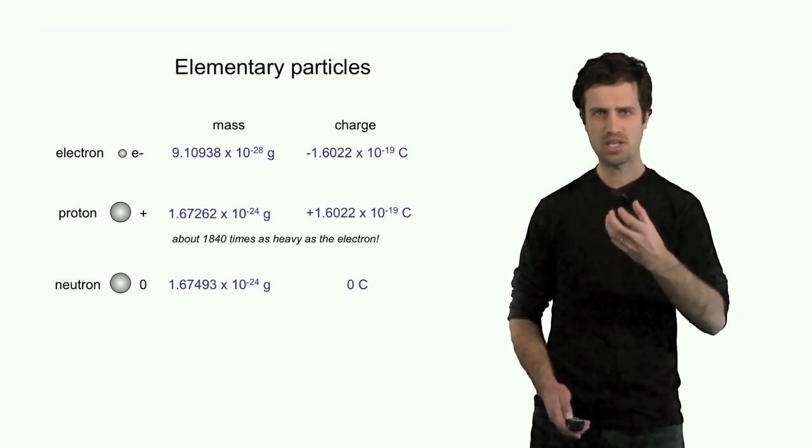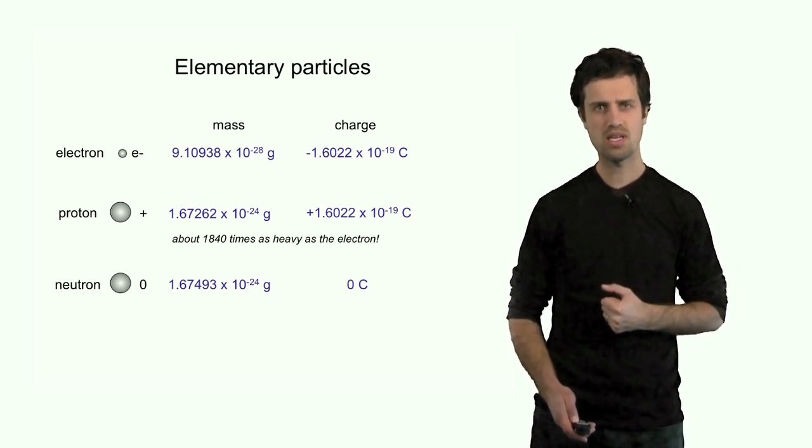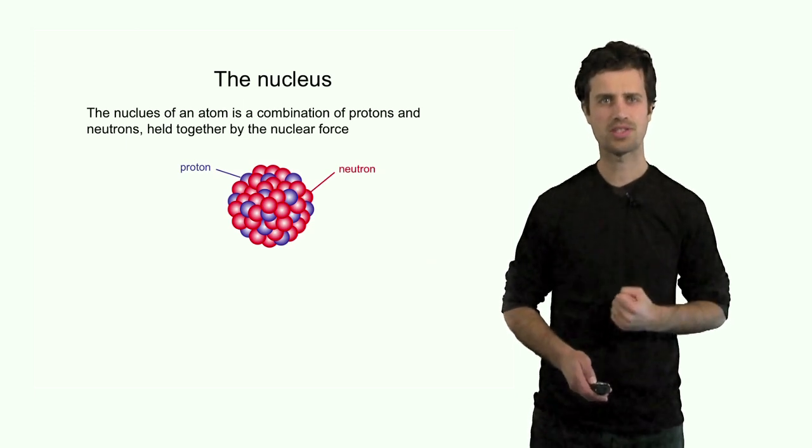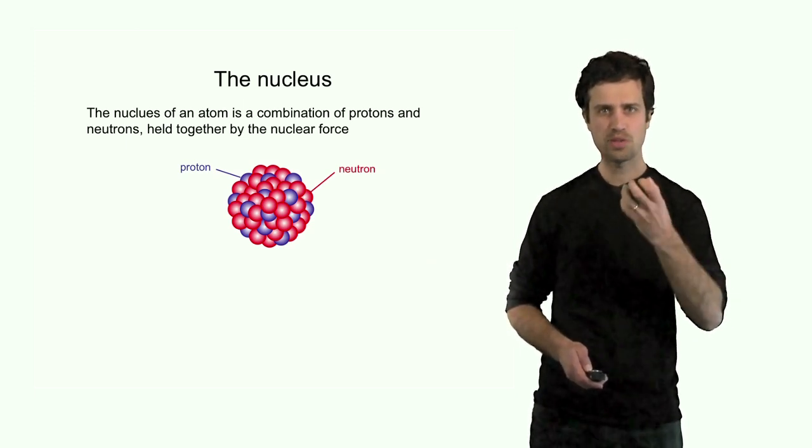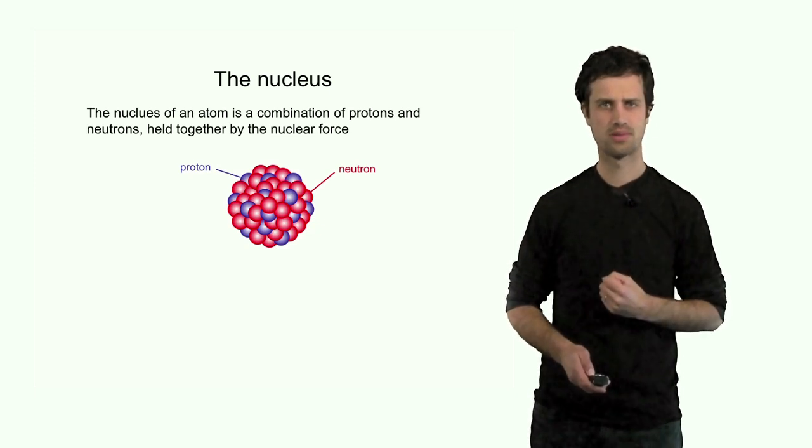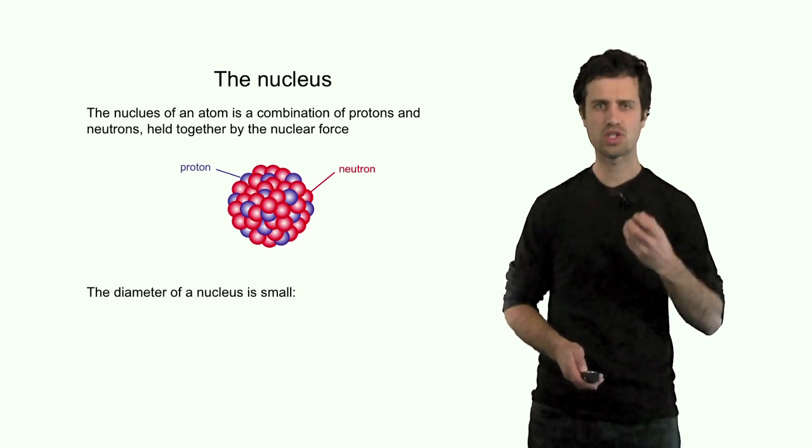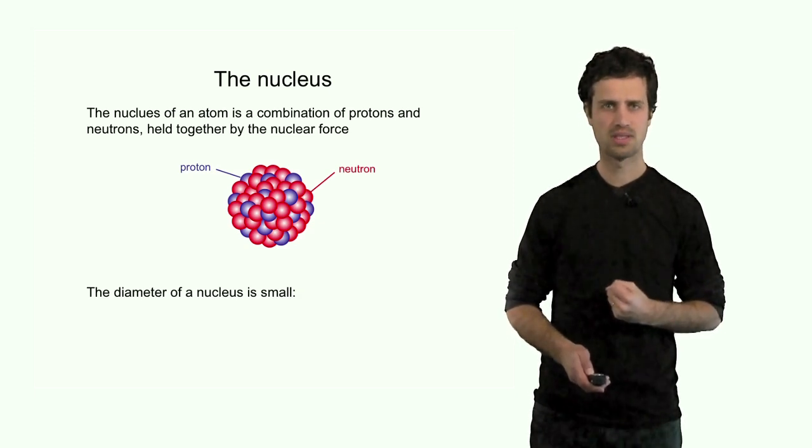Now, the atom is composed of these three particles. The nucleus of an atom, the center part of the atom, is composed of protons and neutrons. And these protons and neutrons are held together by the nuclear force. How big is such a nucleus? Well, let's look at the smallest element, hydrogen.